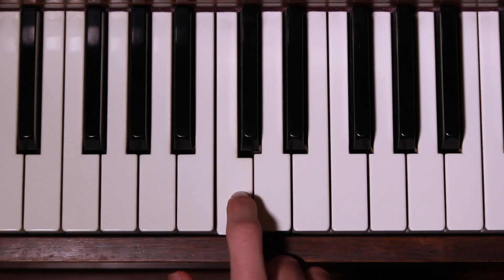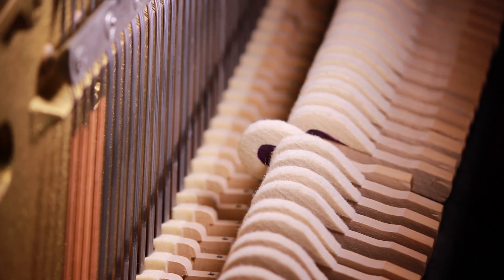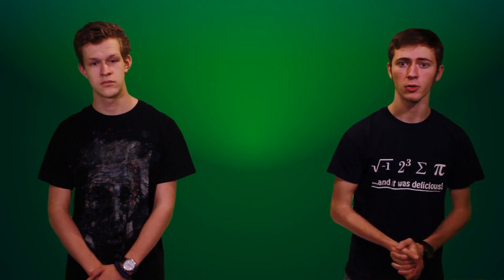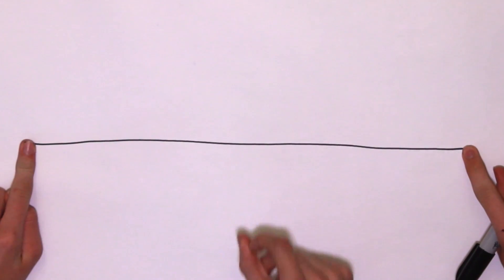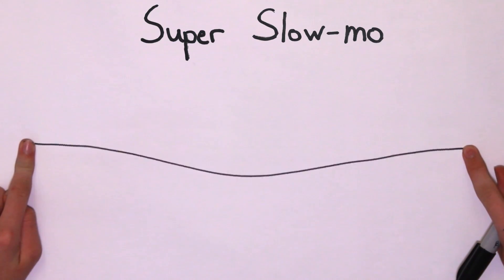When you play a note on a piano, a little hammer inside the piano hits a special string which begins to vibrate at a certain frequency. For this note, middle C, that frequency is about 262 hertz. That means the string is vibrating back and forth 262 times every second.